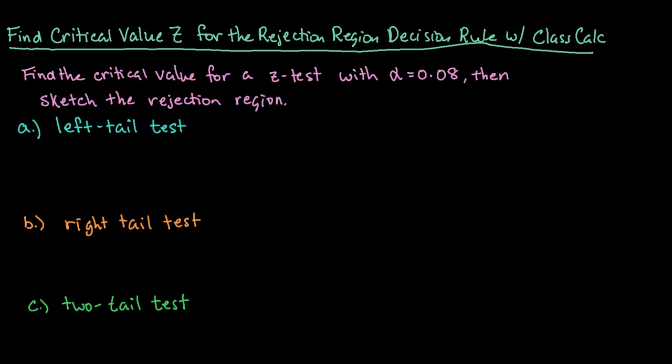Hi. For this video, what I want to do is show you how to find the critical value z when you're using the rejection region decision rule and hypothesis testing. And we're going to use class calc to help us find that.